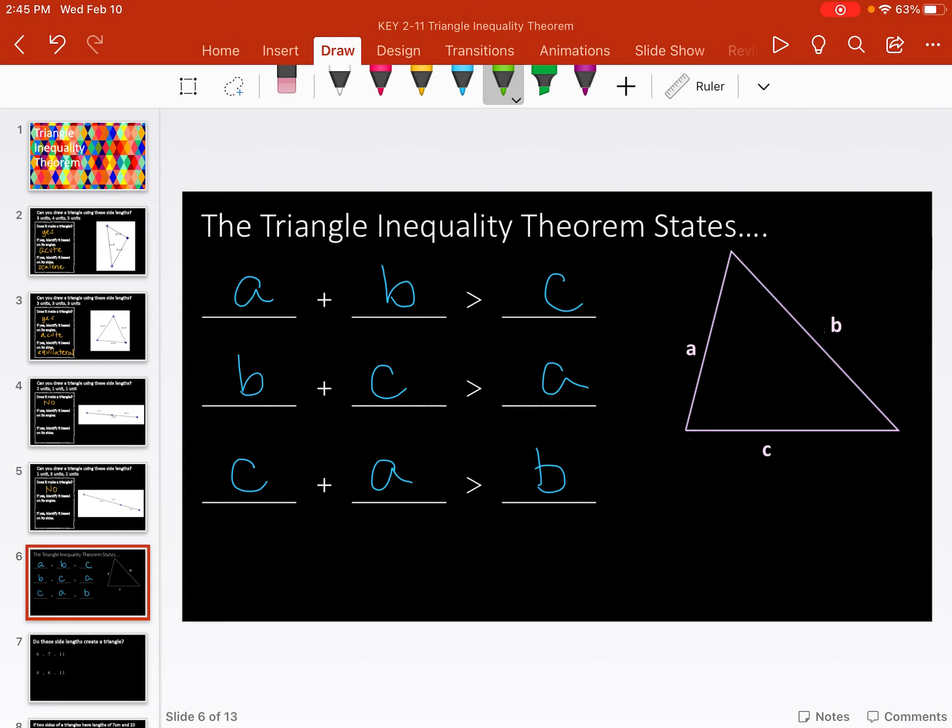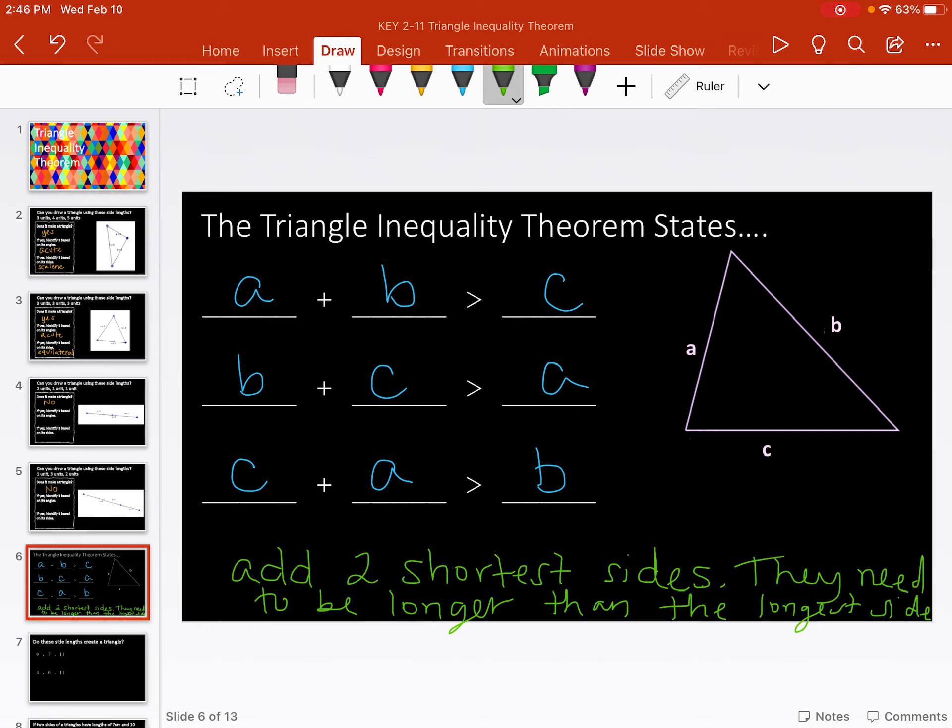So any way that I combine two of the side lengths, when I add them together, they have to be longer than the last side length. So every time you use the theorem, you could try all three ways and that's absolutely fine. Or an easier way to do it is just always take the two shorter sides. And if they can add up to be longer than the longest side, then it automatically works. You don't have to try all three ways. So I kind of just add my two shortest sides, and then I want them to be longer than the longest side.